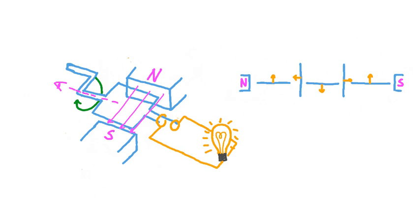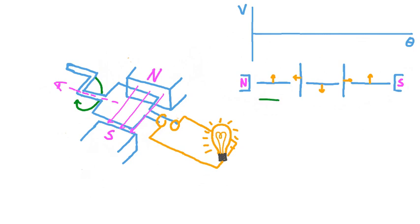As our conducting coil rotates in the magnetic field, we know that voltage and then current are being generated in it, because the light bulb is being lit as we turn the hand crank. We can overlay a plot of the voltage generated in the coil — we'll call it V — versus the angle, we'll call it theta, of the coil. For different orientations of the coil, different potential differences are generated in it, all because of electromagnetic induction. Let's start by considering our initial coil orientation: flat, horizontally arranged.